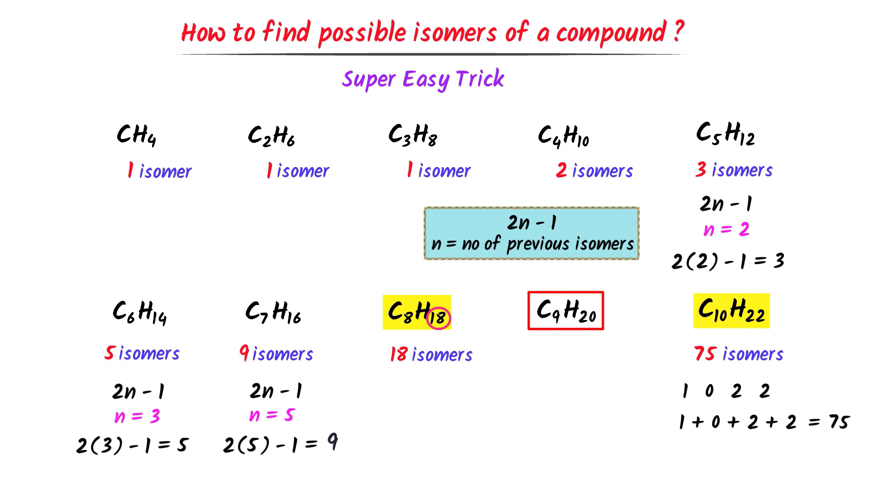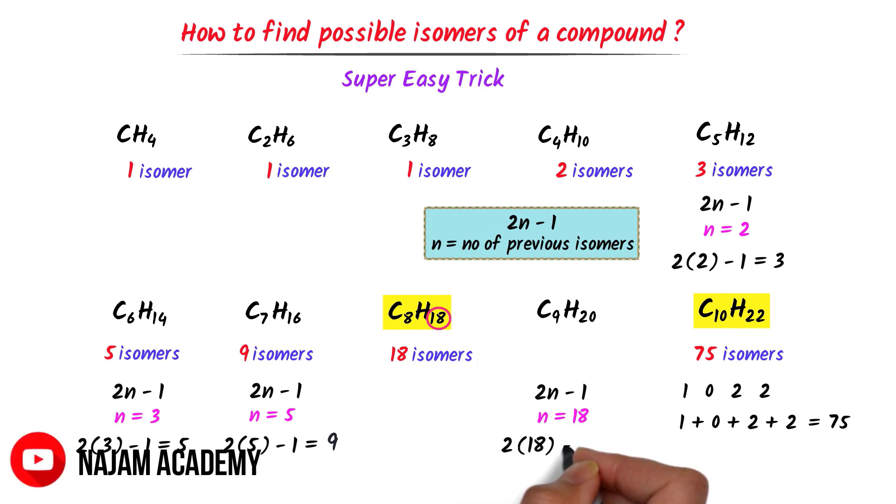In case of nonane, I use the formula 2n-1. The number of previous isomers is 18. Hence, n is equal to 18. I write, 2 times 18 minus 1 is equal to 35. Thus, nonane has 35 isomers.